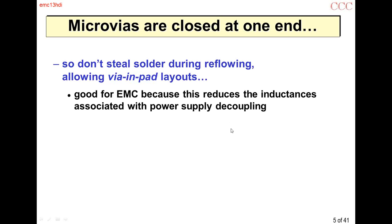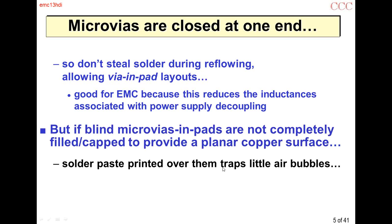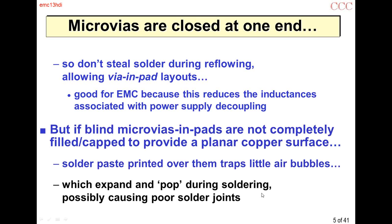Microvias are closed at one end, so they don't steal solder during reflow, which means you can have via-in-pad layouts. This is good for EMC because power supply decoupling suffers from the inductance of pin escape traces. Having via-in-pad reduces that inductance, making decoupling better — above a few hundred megahertz, power supply decoupling is done with the inductance of the PCB pad pattern rather than the capacitor. However, if blind microvias aren't completely covered with a flat surface, you get air bubbles trapped when printing solder paste, which can expand during reflow causing popcorning and bad solder joints.